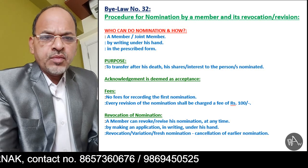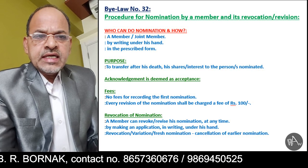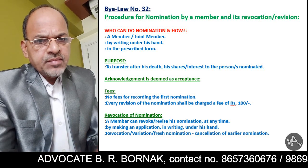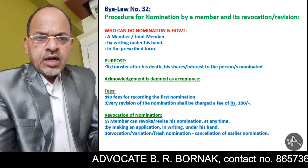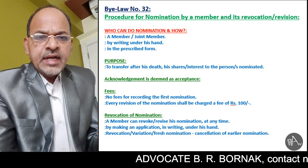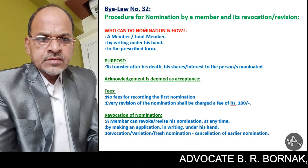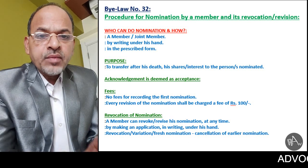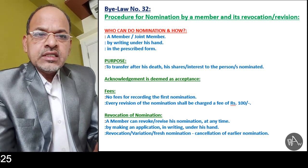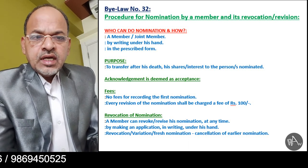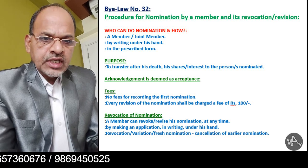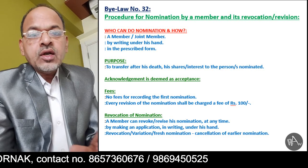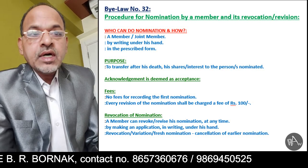Now let us see revocation of nomination. A member can revoke or revise his nomination at any time during his lifetime. He has that liberty, he has that option. For revocation or revision of the nomination, he will have to make an application in writing under his hand to the society. Revocation or revision or fresh nomination amounts to cancellation of earlier nomination. Mere acknowledgement shall be deemed as acceptance of revocation, variation, or fresh nomination by the society. The revocation or variation or fresh nomination amounts to cancellation of the earlier nomination by default. These are the provisions under bylaw number 32.